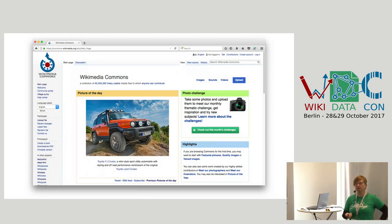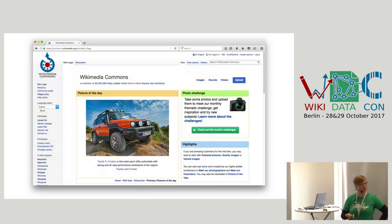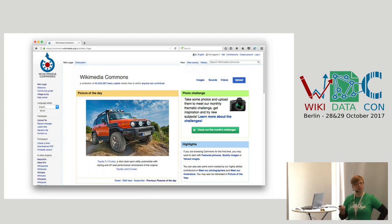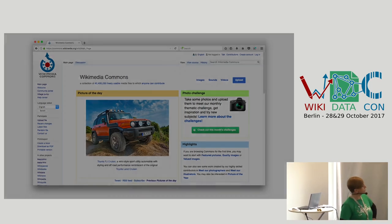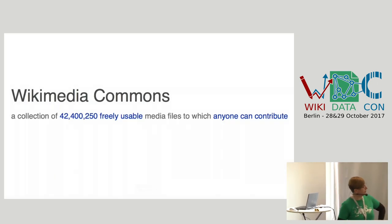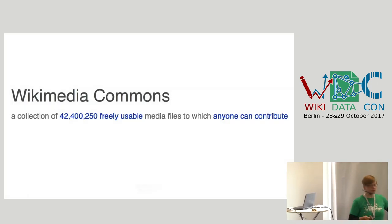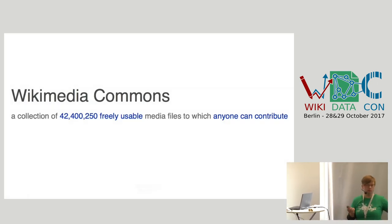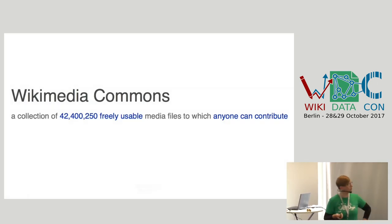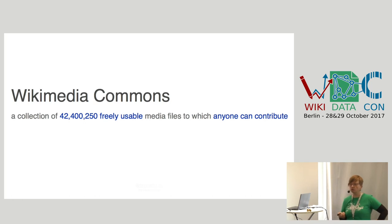Wikimedia Commons is one of the oldest projects in the Wikimedia ecosystem family. At this moment, it's a media repository and it has around 42 million files on it.